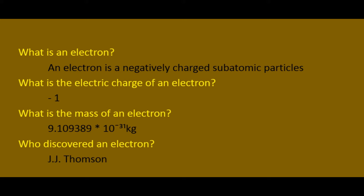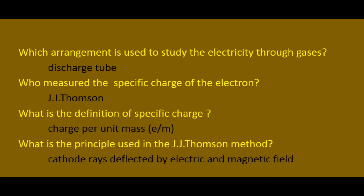What is the electric charge of an electron? That is minus one. What is the mass of an electron? 9.109389 multiplied by 10 to the power minus 31 kg. Who discovered the electron? JJ Thomson.